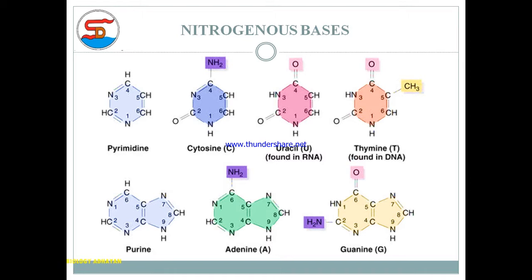Pyrimidines have a six-membered cyclic ring, while purines have a six-membered ring fused with a five-membered cyclic ring. Both purines and pyrimidines are aromatic heterocyclic organic compounds.